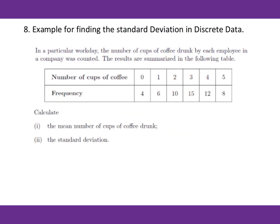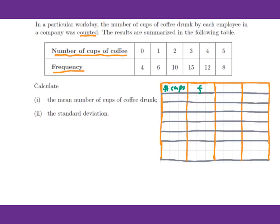Let's go to Example 8. In a particular weekday, the number of cups of coffee drunk by each employee in a company was counted. The results are summarized in the following table. The first row is the number of cups of coffee, then this is the frequency. Calculate the mean number of cups of coffee drunk.